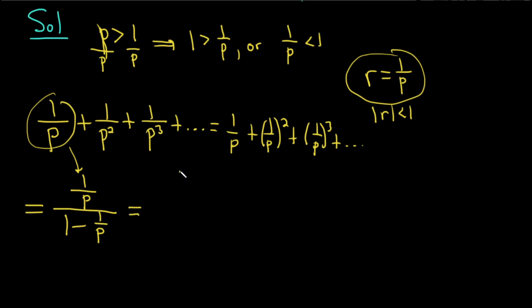So this is equal to 1 over p over, and if we want to perform the subtraction down here let's think of 1 as p over p. So p over p minus 1 over p. So this is equal to 1 over p over, and now we can subtract straight across because the denominators are the same. So this is p minus 1 over p. Just like that.